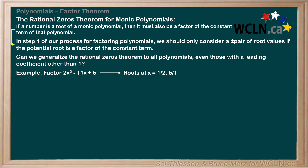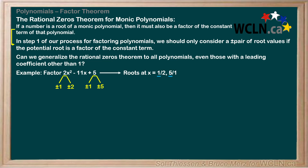To see how this root is related to the polynomial, let's determine the factors of both the leading coefficient, 2, and the constant term, 5. 2 only has factors of plus or minus 1 and plus or minus 2, and 5 only has factors of plus or minus 1 and plus or minus 5. Notice that both the denominators of the roots are contained within the list of factors of the leading coefficient, 2, and both the numerators of the roots are contained within the list of factors of the constant term, 5. This extends to any polynomial.